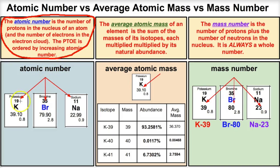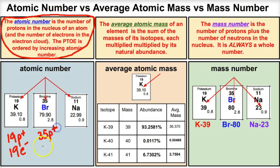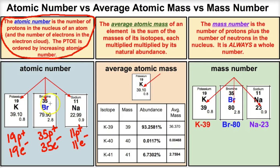The atomic number is the number of protons in the nucleus of an atom and the number of electrons in the electron cloud. For potassium, atomic number 19 means 19 protons inside the nucleus and 19 electrons outside. Bromine has atomic number 35 — 35 protons and 35 electrons. Sodium has atomic number 11 — 11 protons and 11 electrons.